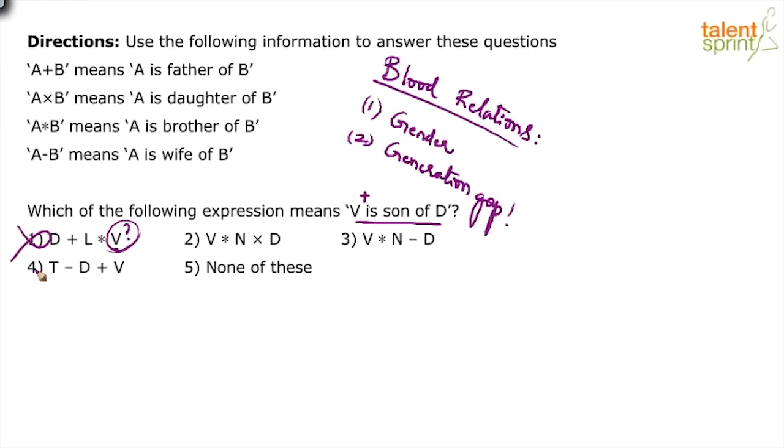You don't have to know the family tree here. Are you able to follow? Similarly, when you look at option 4, V is at the end. Look at the relationship: T minus D plus V. Plus means father. D is the father of V, but is V the son or daughter? Not known to us. We very clearly want the gender of V to be a male person, but here in option 4, gender is not known. So options 1 and 4 are directly eliminated.